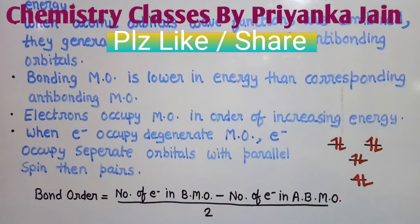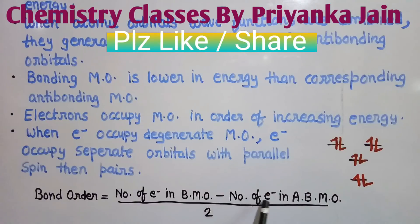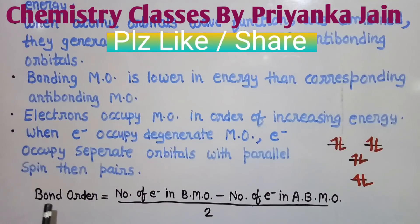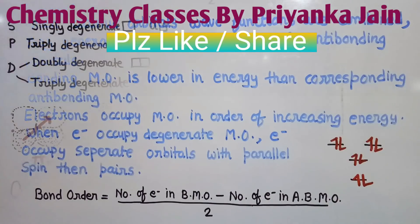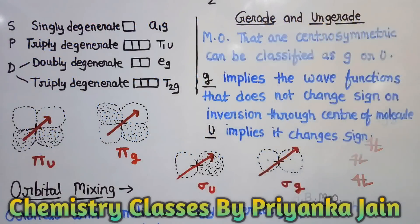The bond order is given by the number of electrons in the bonding molecular orbitals minus the number of electrons in the anti-bonding molecular orbitals, divided by two. From the bond order we can understand the strength of the molecule and also its magnetic properties.